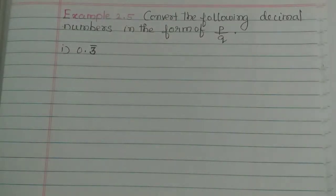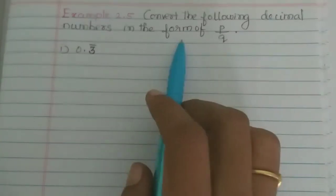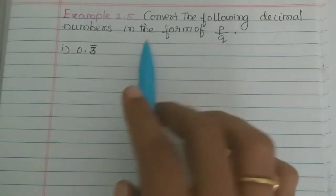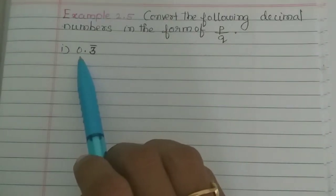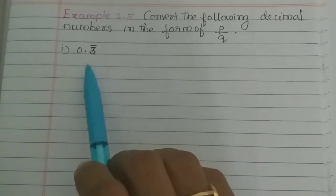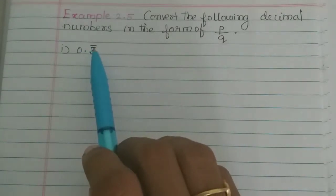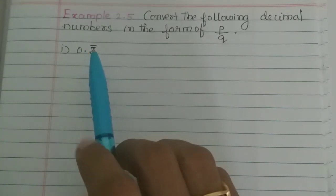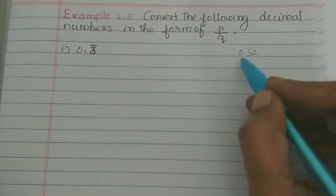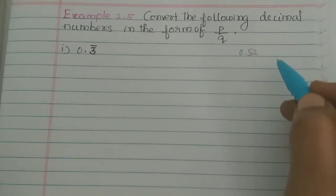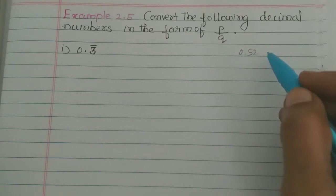Hi students! In this video, we have to convert the following decimal numbers in the form p by q. We have to say the decimal number as p by q. What decimal number is the recurring decimal number? In this example, we have to say non-recurring. That means terminating is 0.52. So we have to say the recurring number without a decimal — we have to say the decimal number as a rational number.